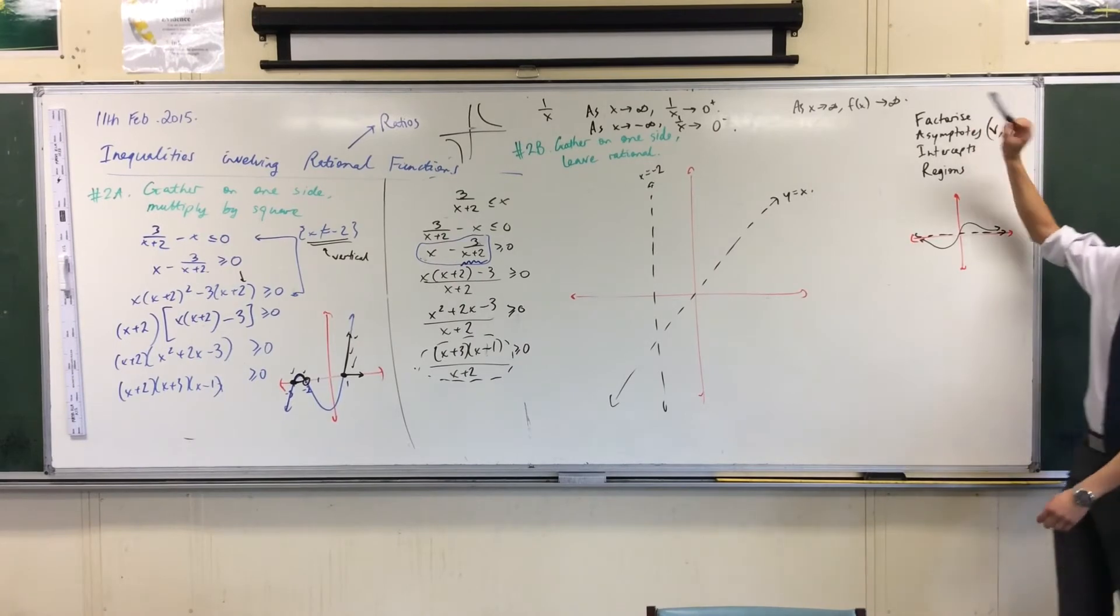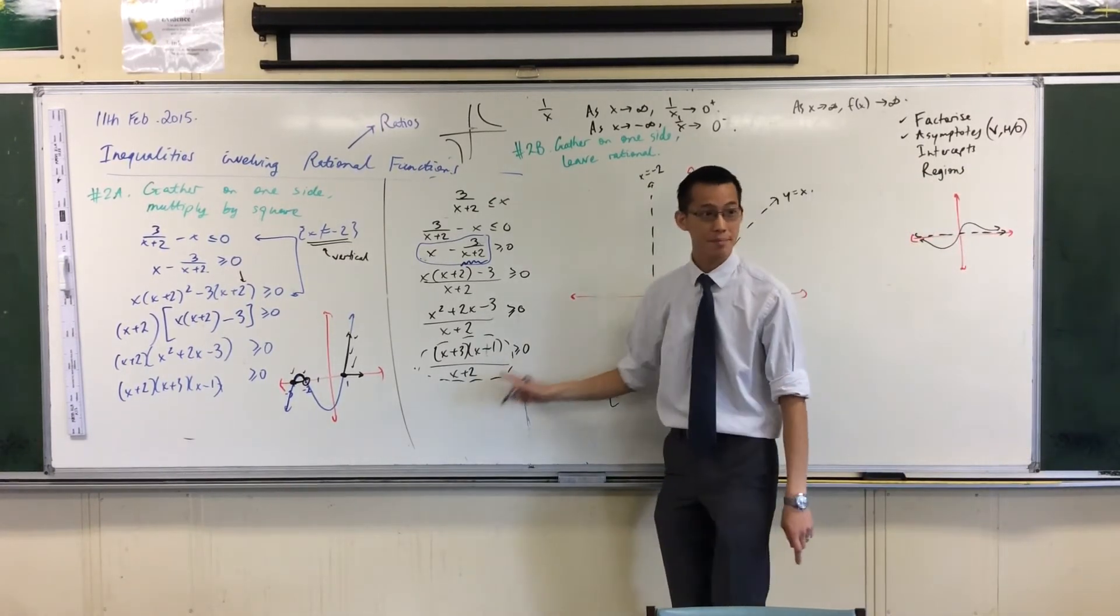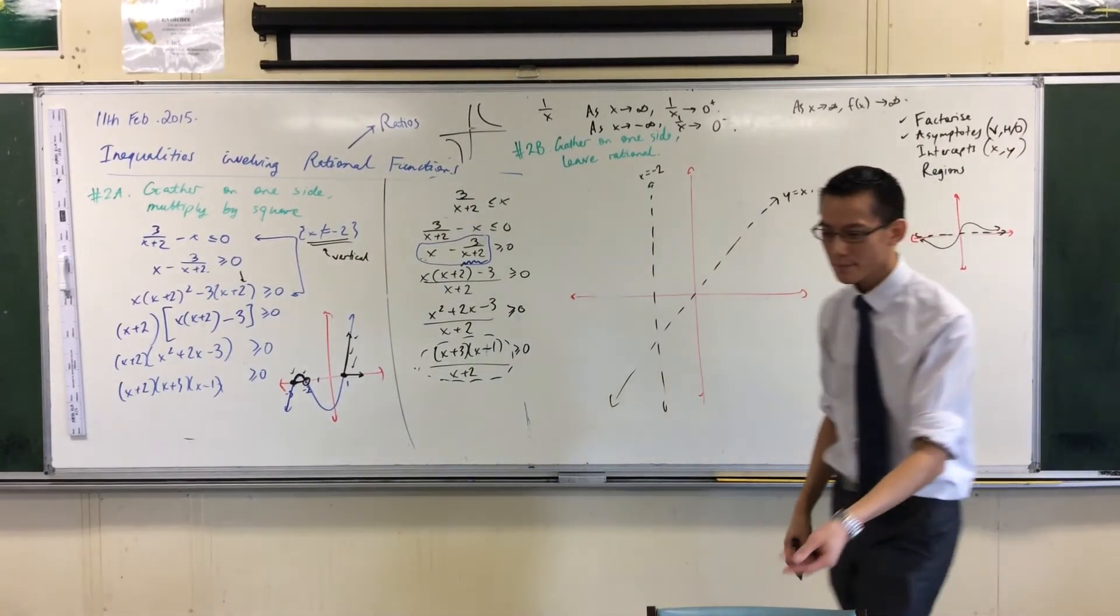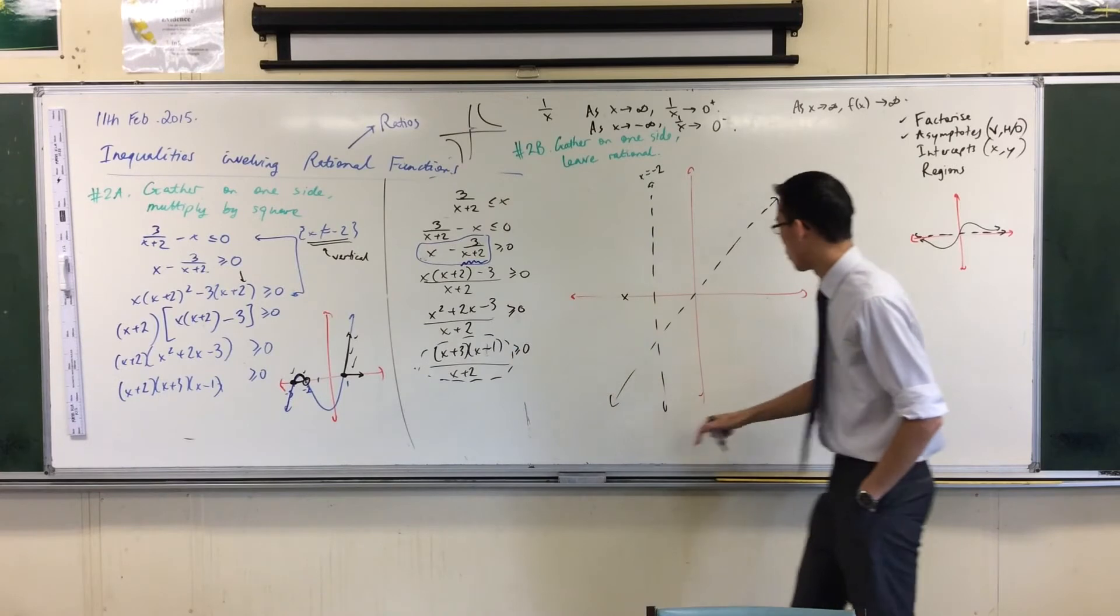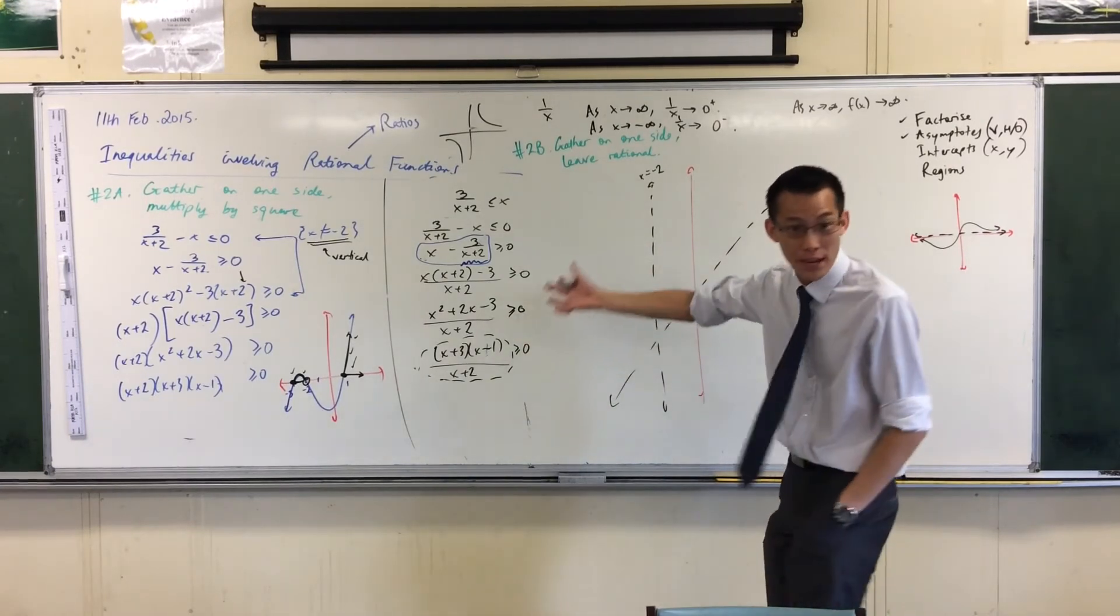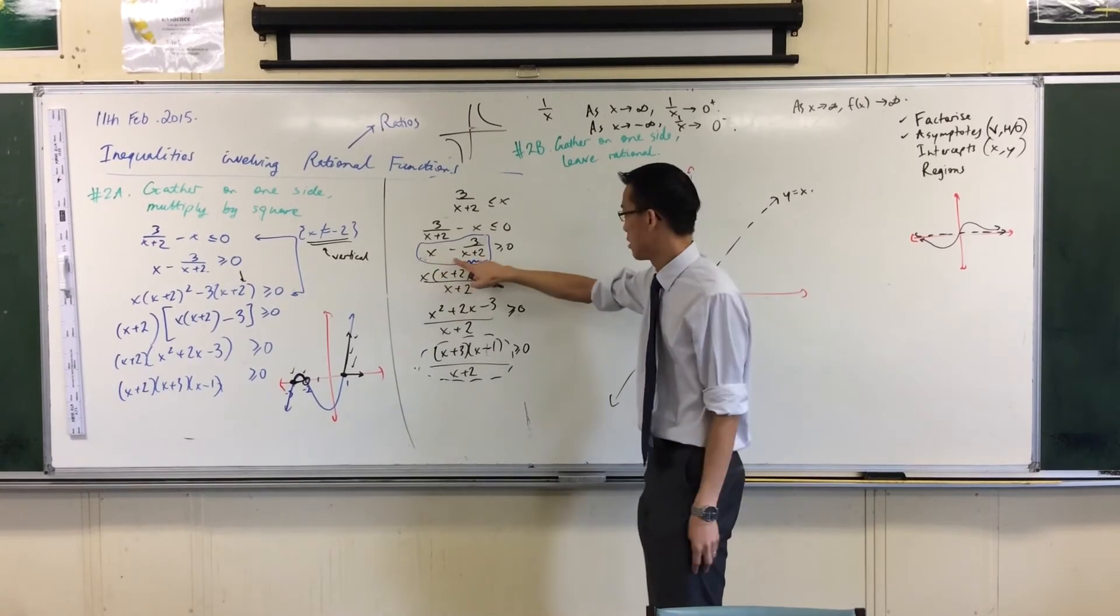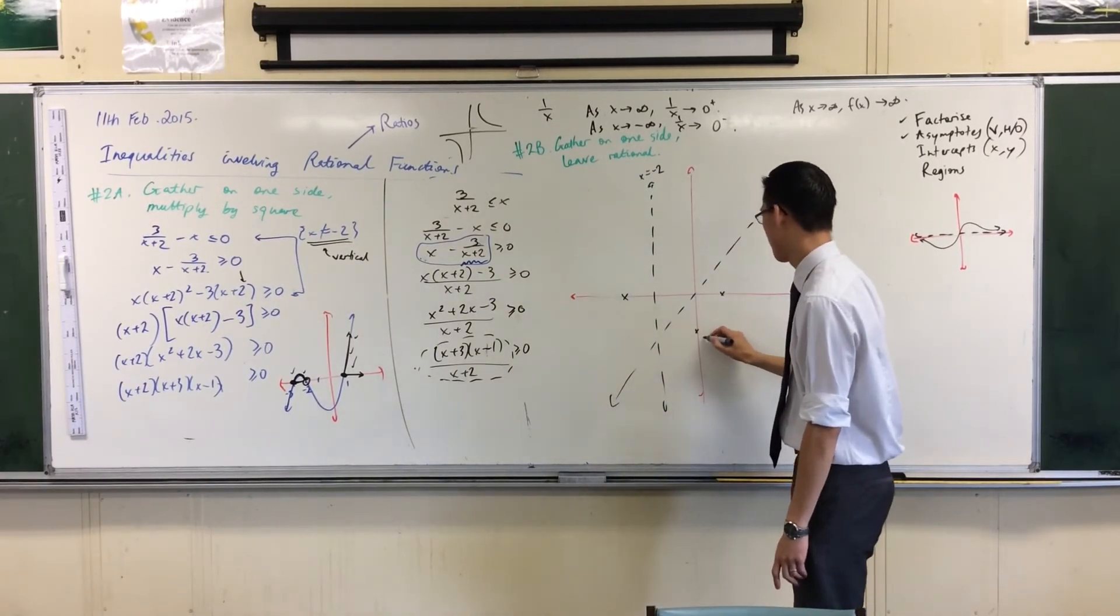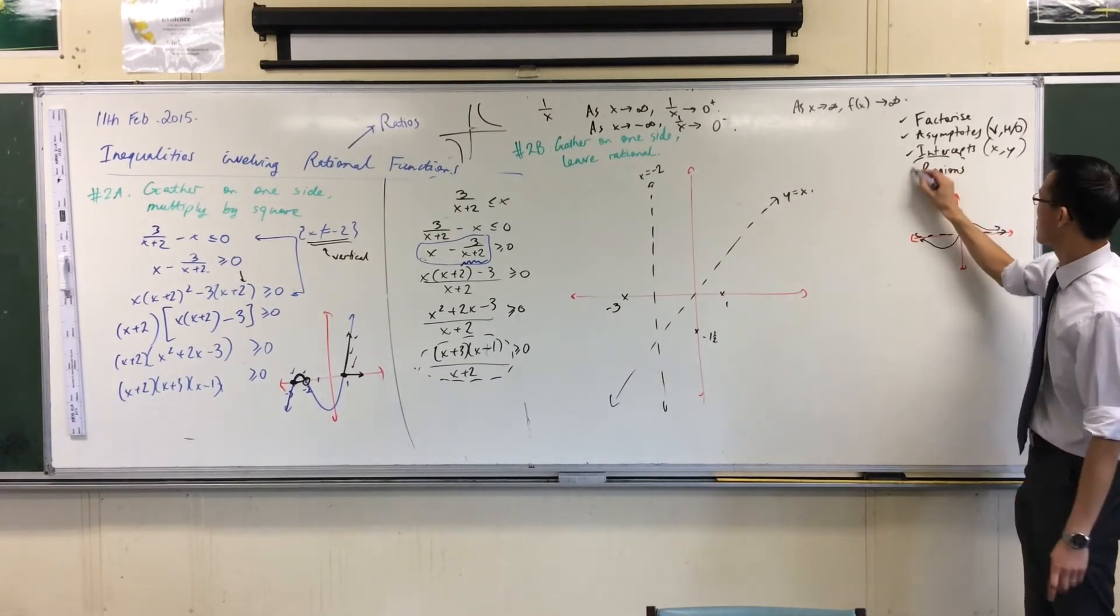We factorized, we worked out the asymptotes, now I want some intercepts. What are the intercepts of this thing? There's two kinds, there's an x-intercept and a y-intercept. I can tell you right now that I've got an x-intercept at negative 3, an x-intercept at 1 somewhere over here. And then there should be a y-intercept. How do I find y-intercept? I slap in x equals 0, the easiest place would be here. Minus 3 on 0 plus 2, that's negative 1 and a half. Does that number seem familiar? It's just that it's the negative.